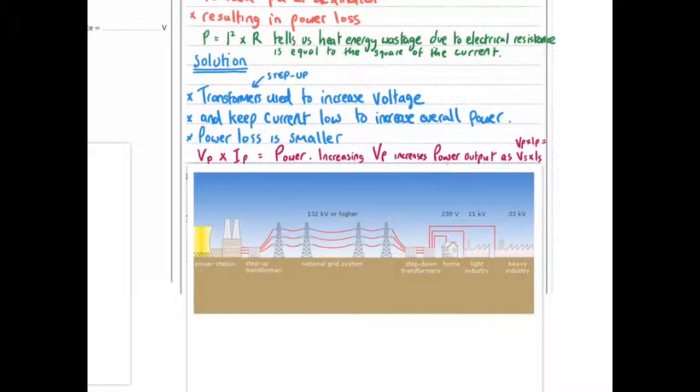So voltage times current is power and power input is equal to proportional to power output. It's the same as power output. So if you increase the voltage input you'll increase the power voltage output which increases the power output. So that's how transformers work.